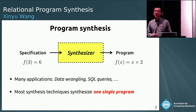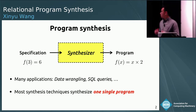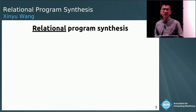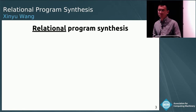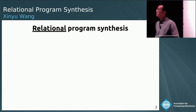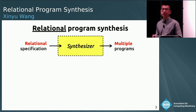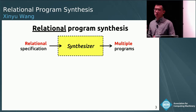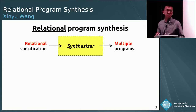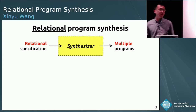However, existing synthesis techniques focus on synthesizing one single program at a time. In this work, we formalize and study a new class of synthesis problems, which we call relational program synthesis, that also has many real-world applications. In contrast to existing synthesis problems, in this problem we are interested in synthesizing multiple programs that collectively satisfy a so-called relational specification.